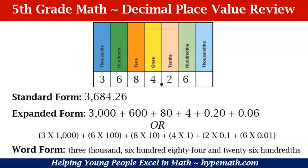We see that our three is in the thousands place. The six is in the hundreds place. The eight is in the tens place. The four is in the ones place. The two is in the tenths place — notice fifth graders, it is after that decimal point. And the six is in the hundredths place. So in standard form, we just write it like a regular number: 3,684, then we put our decimal point and we have 26 after that.